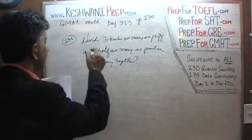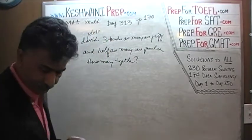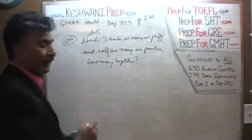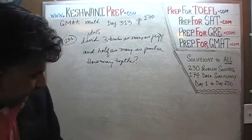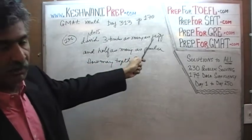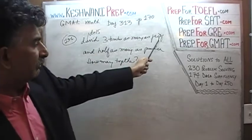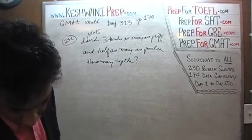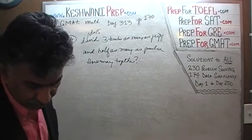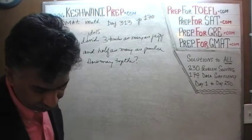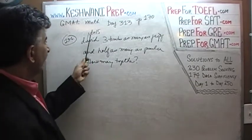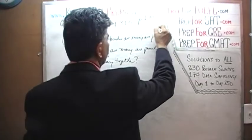David has three times as many as Jeff and half as many as Paula, so plug in a number for David you like, whatever number you like. Let's pretend that D is equal to 15. Why 15 and why not 10? Because they go on to say that David has three times as many as Jeff. If you plug in 10 here then Jeff will end up having some fraction.